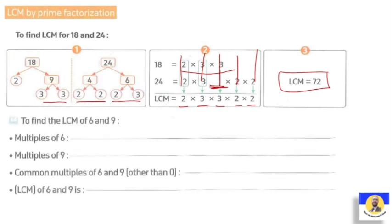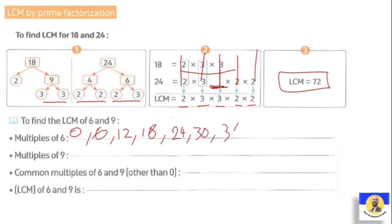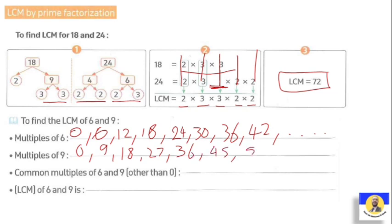Let's solve examples using both methods. First question by listing method: find the LCM of 6 and 9. Multiples of 6: 0, 6, 12, 18, 24, 30, 36, 42 — count by six (skip counting). Multiples of 9: 0, 9, 18, 27, 36, 45, 54, and so on.